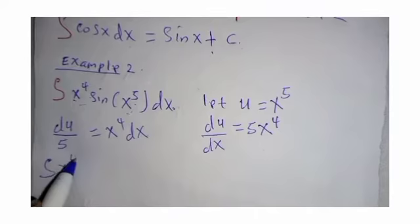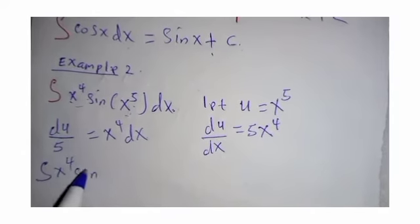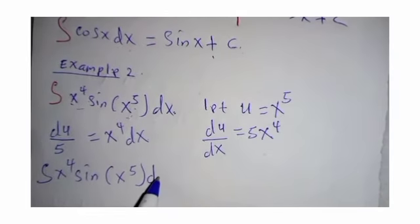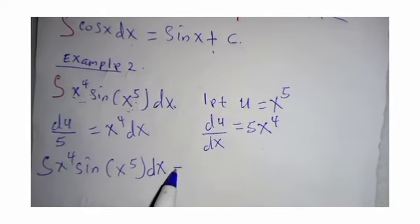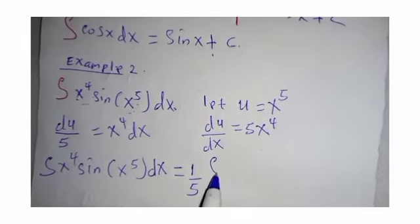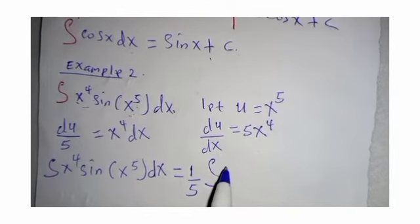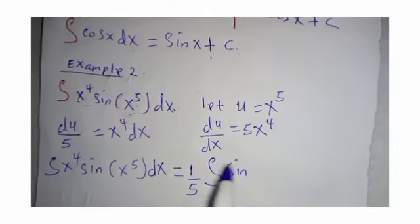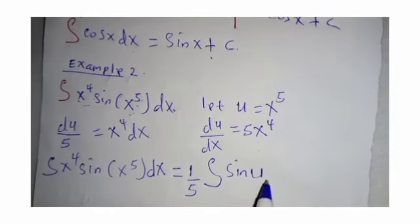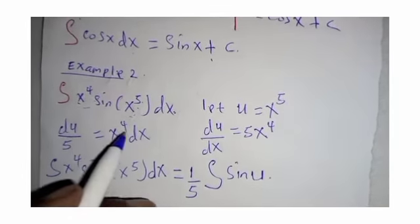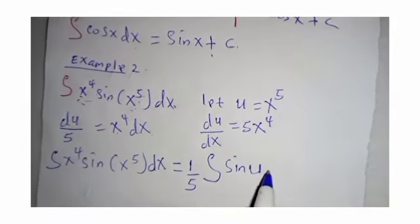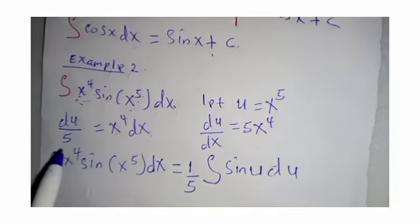Our x power 4 sine of x power 5 dx can be written as 1 over 5 integral of sin. Instead of x power 5 we write u, the one which is there, instead of dx x power 4 dx we are going to write du.